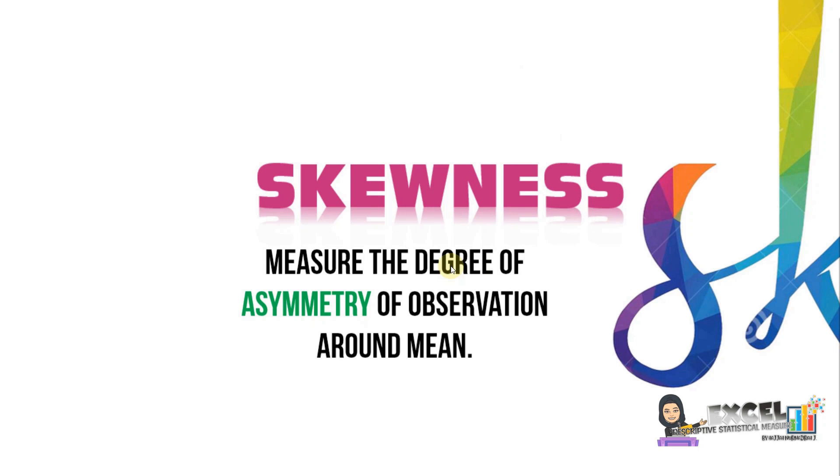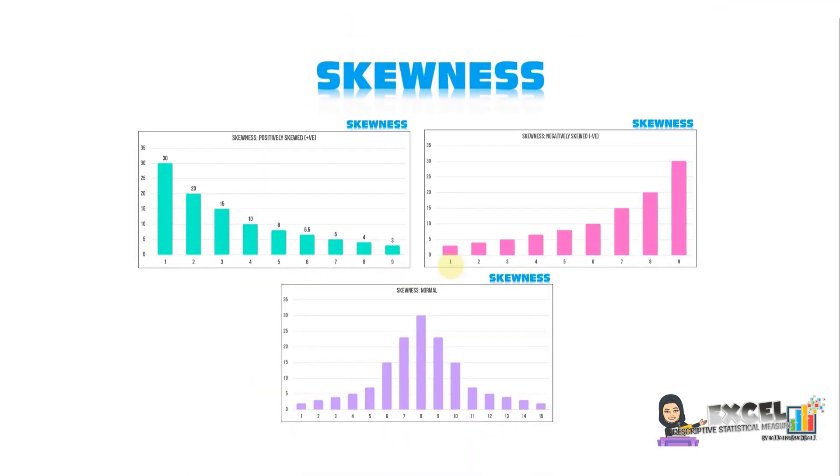Whether it is positively skewed, negative, or normal. This is the graph which shows the three categories: positive, negative, and normal.